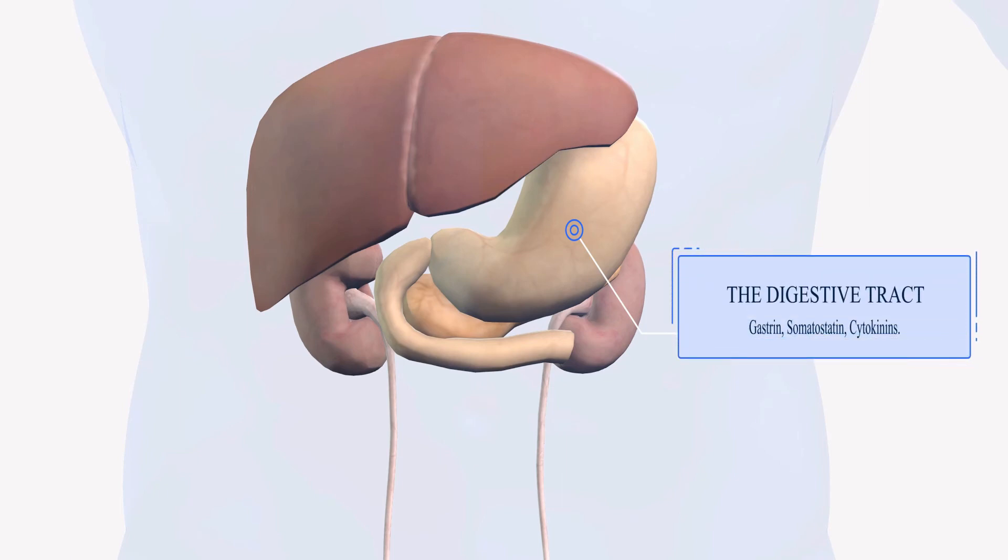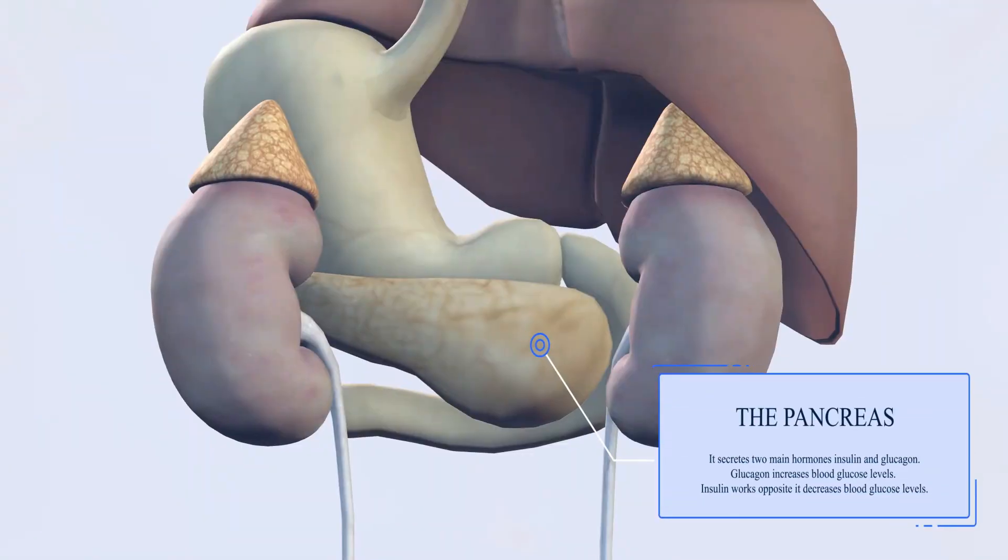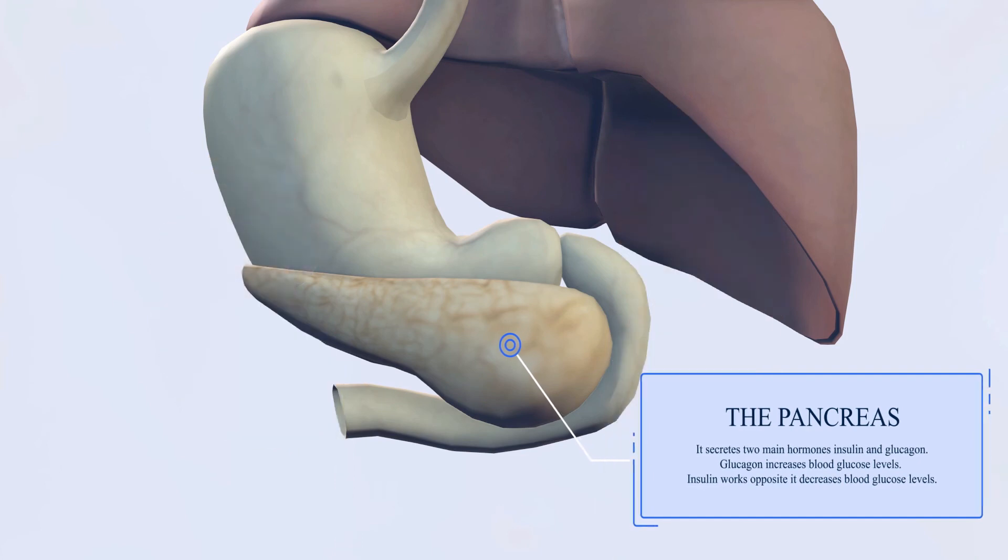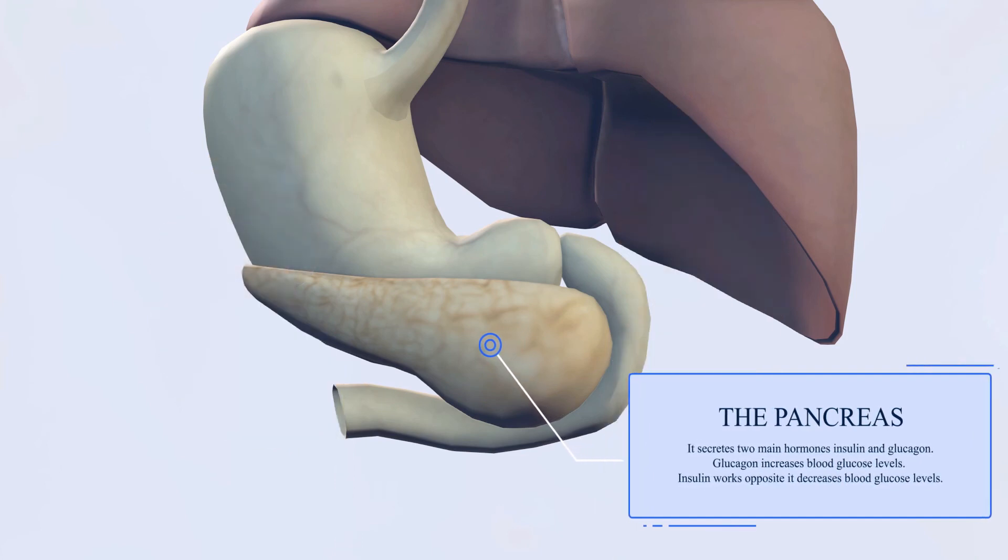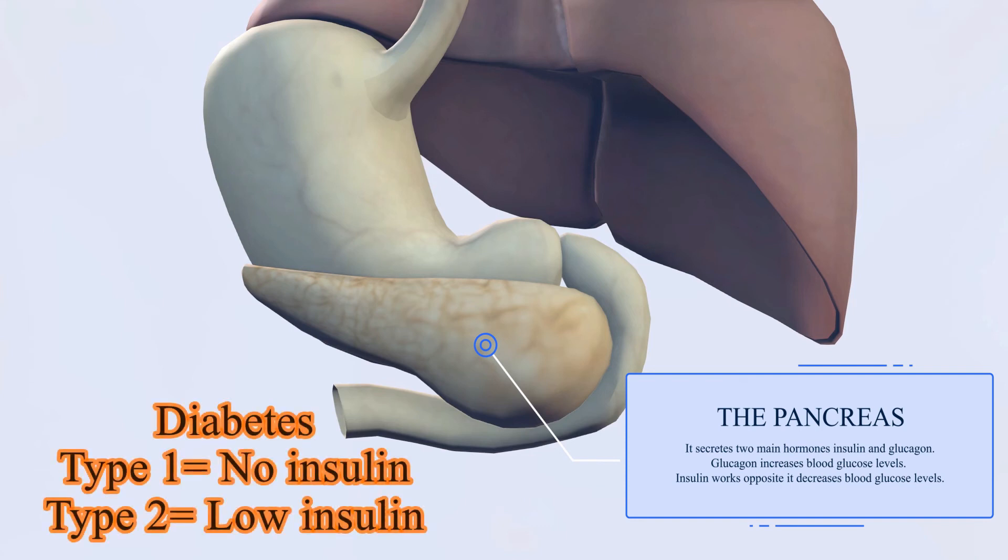Another very important endocrine gland or tissue is the pancreas. It secretes two main hormones insulin and glucagon. Glucagon increases blood glucose levels. Insulin works opposite, it decreases blood glucose levels and you might know diabetes. Diabetic people, they have very low insulin levels. Type 2 diabetes they have low insulin levels. Type 1 they have depleted insulin levels.